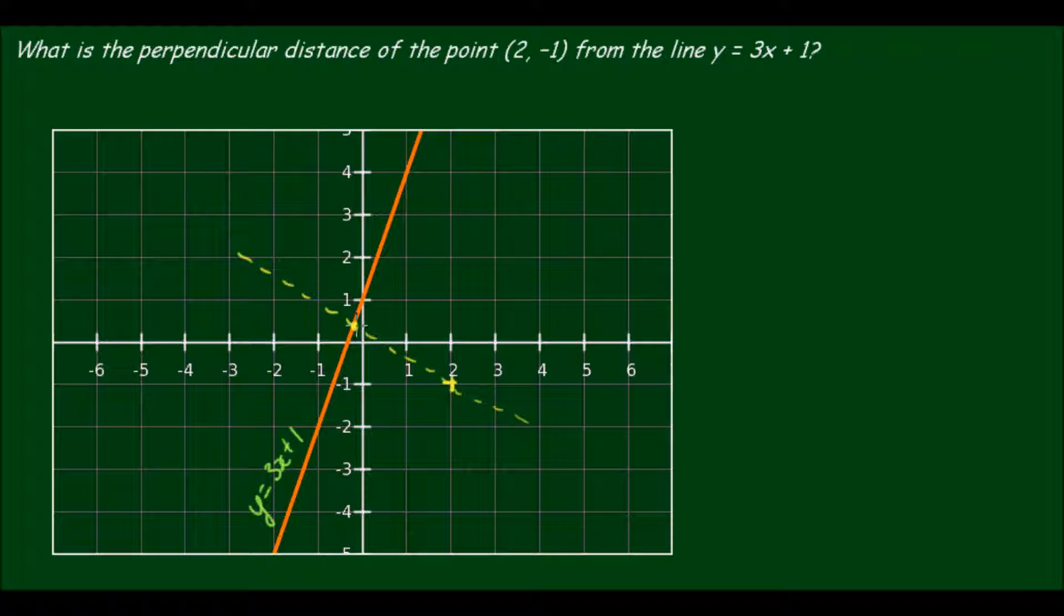Where it intersects the orange line to our point is where we want to calculate this perpendicular distance. And I shall draw a square in this corner to show that these two lines are perpendicular.